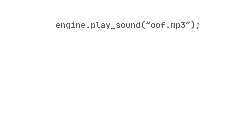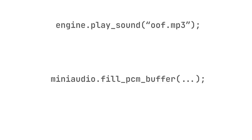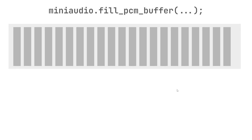An engine gives you a simple API — maybe a trigger or a dropdown where you select the sound file. You just know the timing and the filename. But if you go a bit deeper, one API you could use is miniaudio, which gives you something called 'fill PCM buffer.' It just gives you a buffer — basically an array — and asks you to fill it. When I first looked at it, I thought: what am I even supposed to put in here?